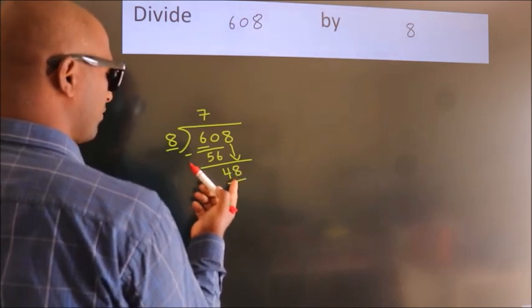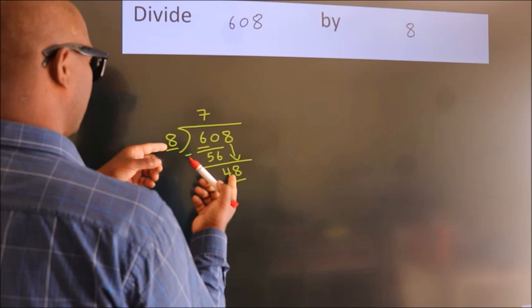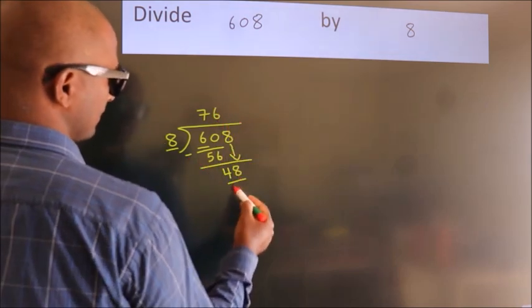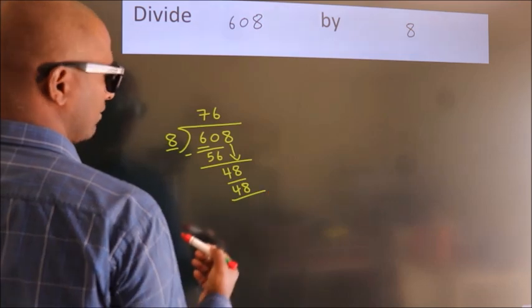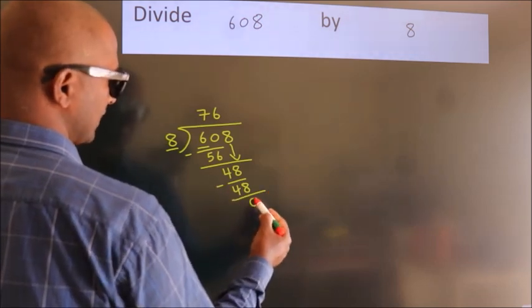When do we get 48? In the 8 table. 8 times 6 is 48. Now we subtract. We get 0.